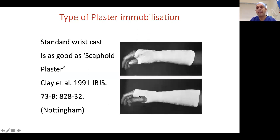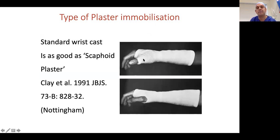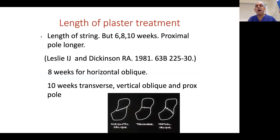Regarding plaster immobilization: a normal Colles cast is as good as a thumb spica cast, because thumb movement doesn't generate enough movement at the fracture site to prevent healing. The only exception is the proximal pole — if the patient has medical issues preventing surgery, the thumb should be immobilized. Length of plaster treatment varies from six to ten weeks: roughly six weeks for a waist fracture, up to ten weeks for a proximal pole fracture.